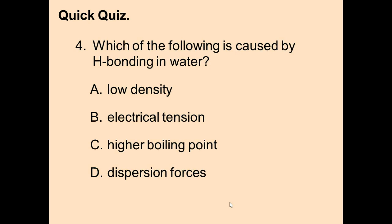Question 4: Which of the following is caused by H bonding in water — A) low density, B) electric tension, C) higher boiling point, or D) dispersion forces? Low density applies to ice, not liquid water — eliminate A. Electrical tension was never discussed — eliminate B. Dispersion forces are a separate IMAF, not caused by H bonding — eliminate D. C is correct: H bonding makes water attract to itself, so it doesn't want to boil, resulting in a higher boiling point.